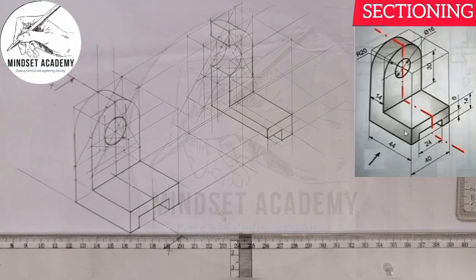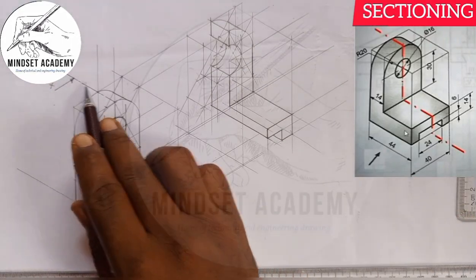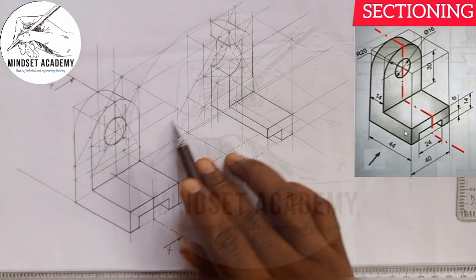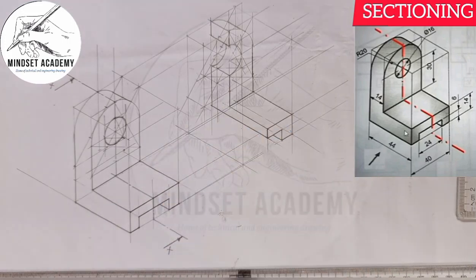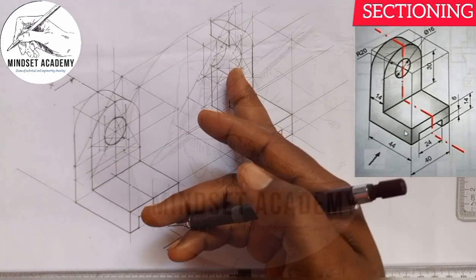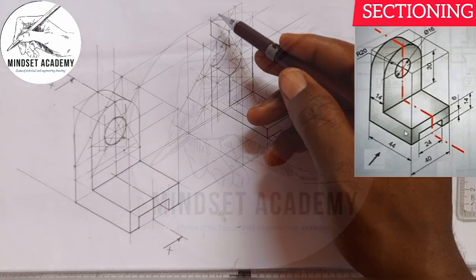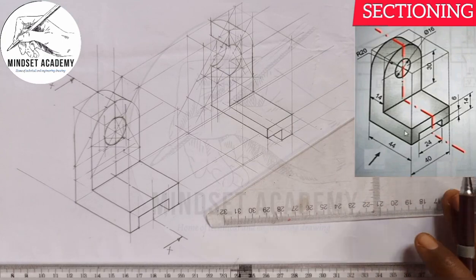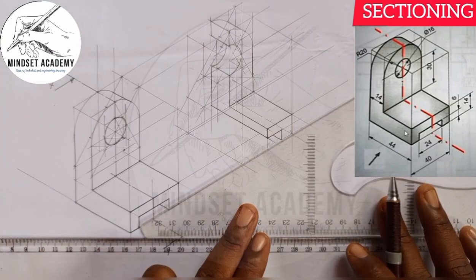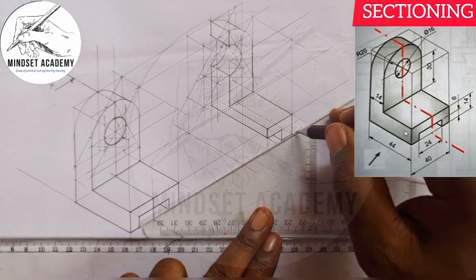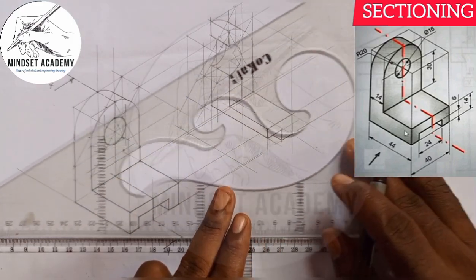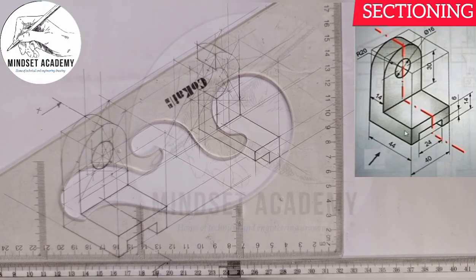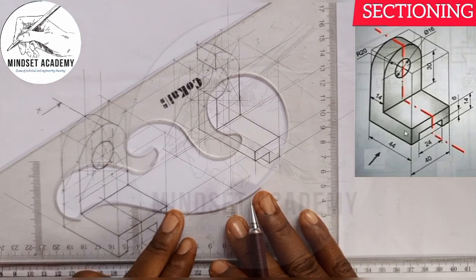This is what we have after cutting the plane into two. This is what we are going to be seeing when we are looking from this direction. In terms of orthographic projection, the end view will become something like this — let me show you what it will look like.